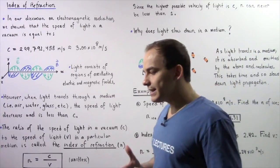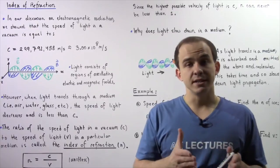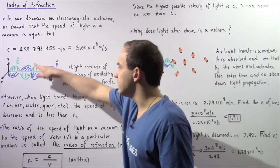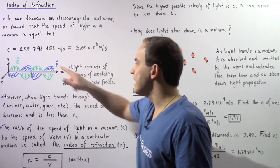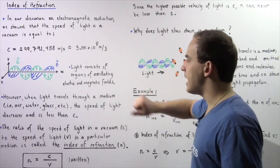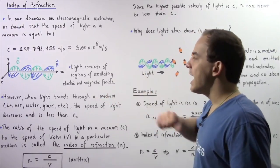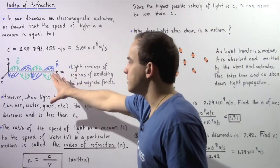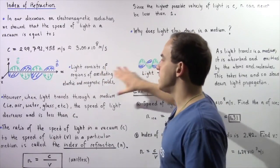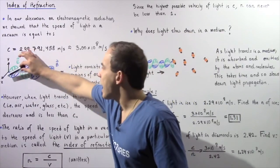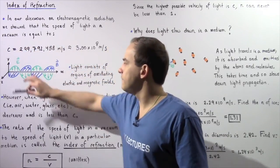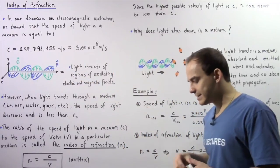Because light is electromagnetic radiation, that means light consists of oscillating electric fields, shown in green, and oscillating magnetic fields, shown in blue. This is an example of a single wave of light propagating in the positive direction along the x-axis, with the electric field oscillating along the y-axis and the magnetic field oscillating along the z-axis.